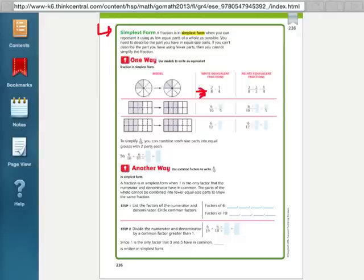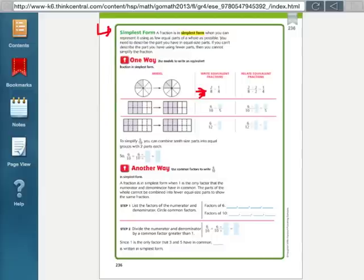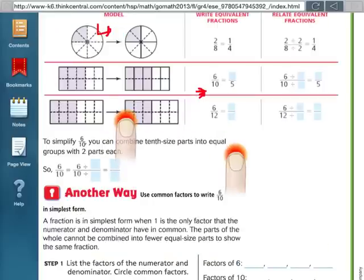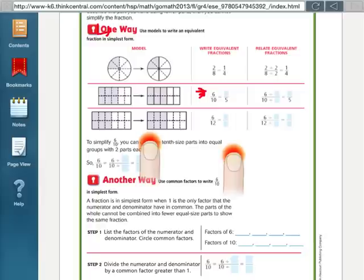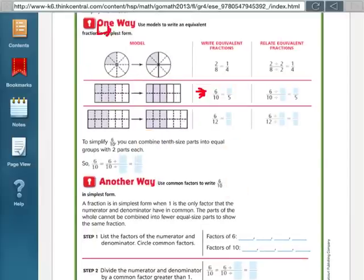So, one way to do that is to use models, and they've given us a model here. Let me make this a little bit bigger. Okay. So, they've given us a model here, and they've told us that the fraction for this first model is 2 eighths, and they're writing it in an equivalent fraction of simplest form, which is 1 fourth. The way that they did that was, instead of generating an equivalent fraction like we've been doing, where we multiply the top and the bottom times the same number, this time, simplest form, you do the opposite. You've got to divide.